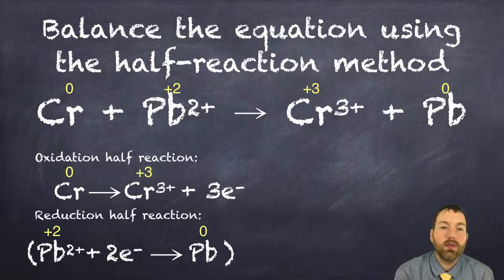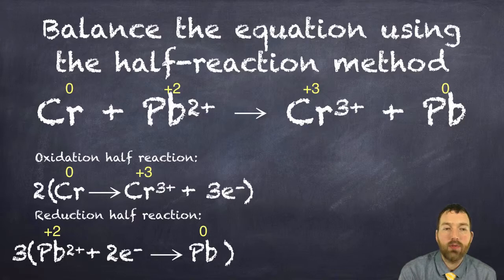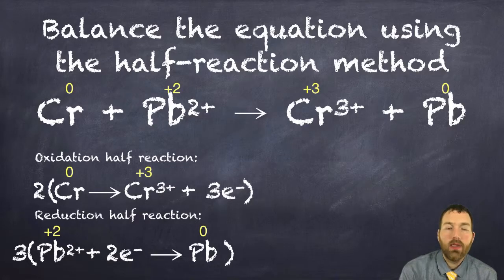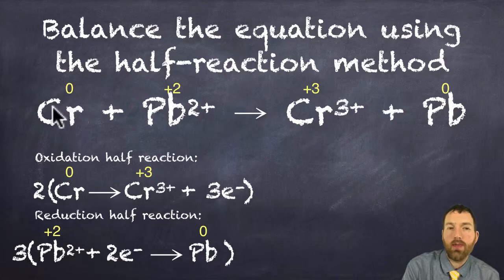In this bottom half reaction, I'll multiply it by three. In this top half reaction, I'll multiply the whole thing by two. Then remember, whatever changes we made down here, we just kind of make them above, or you kind of just squash these two half reactions together.